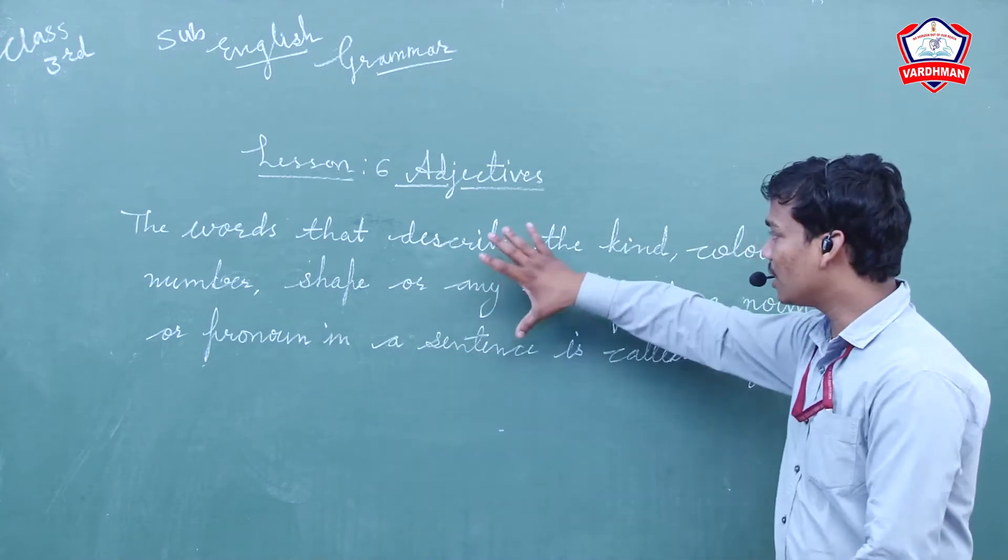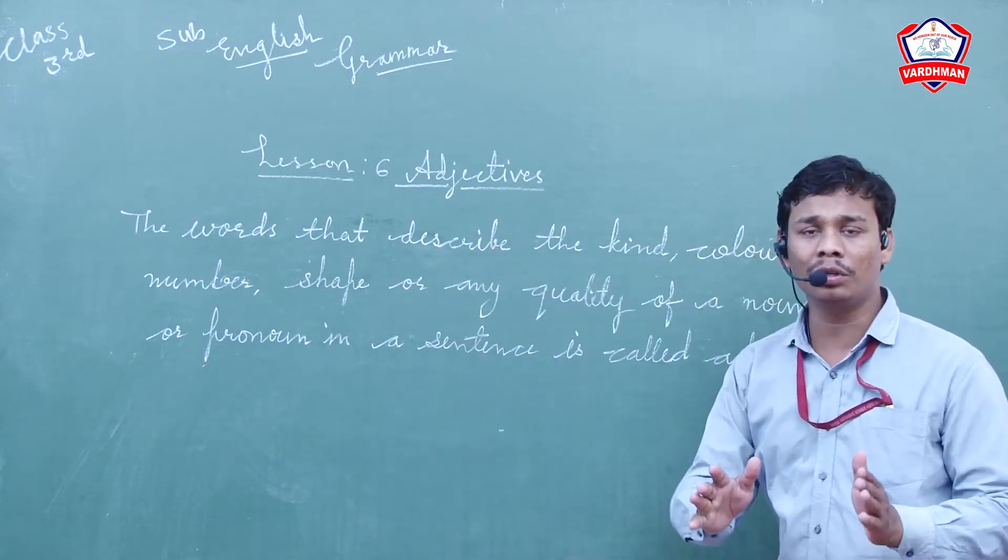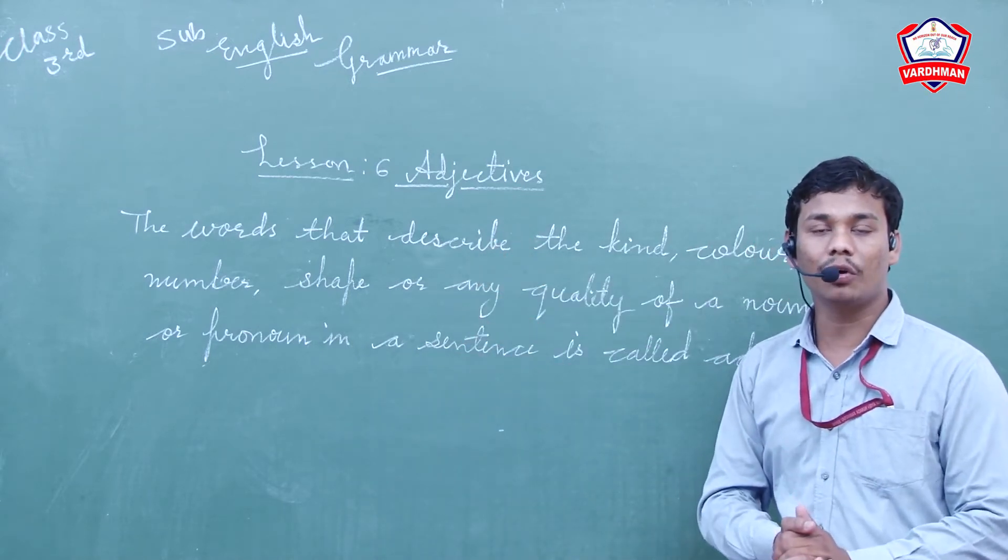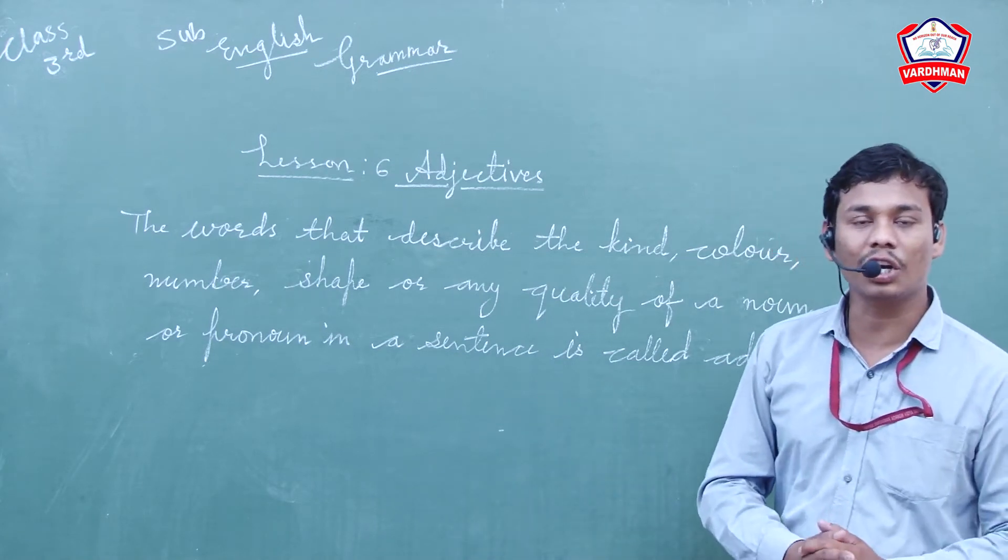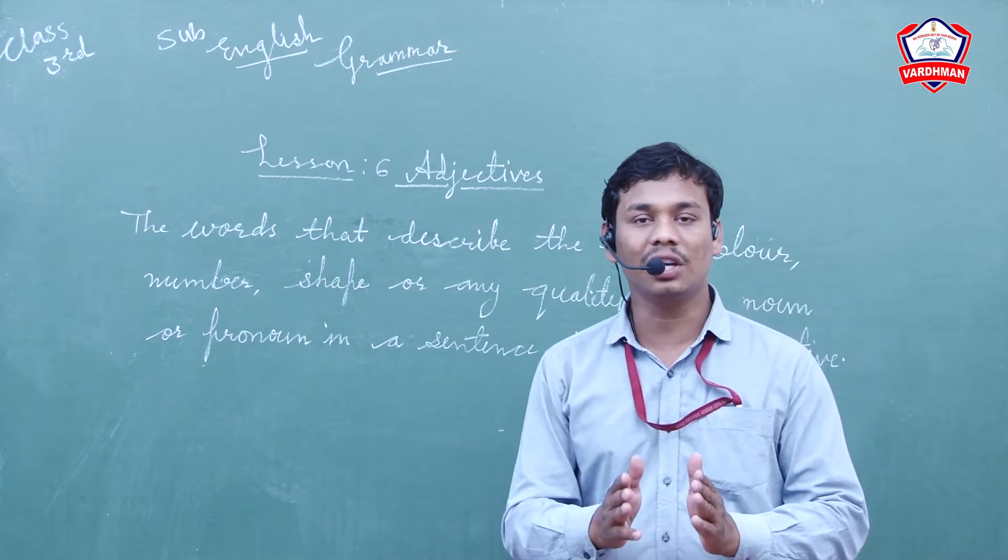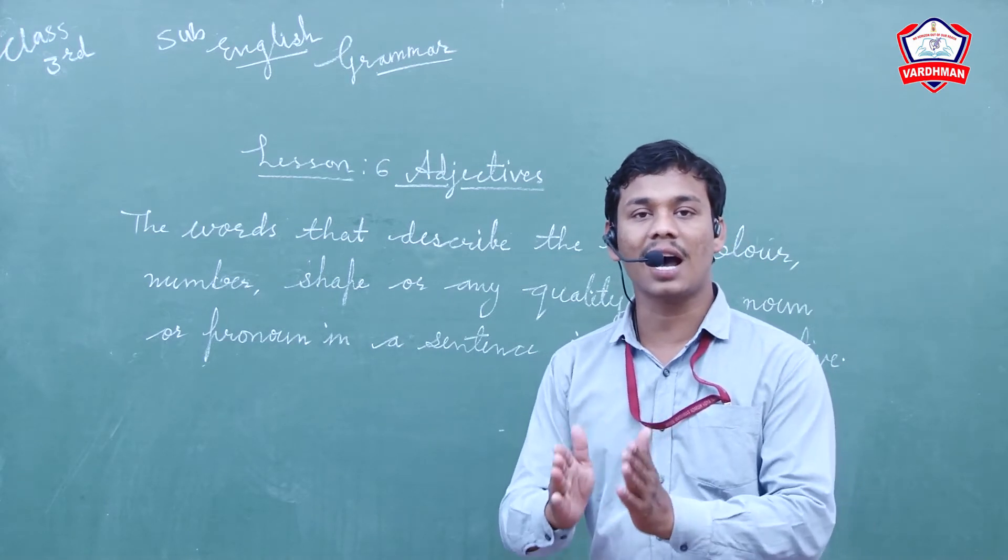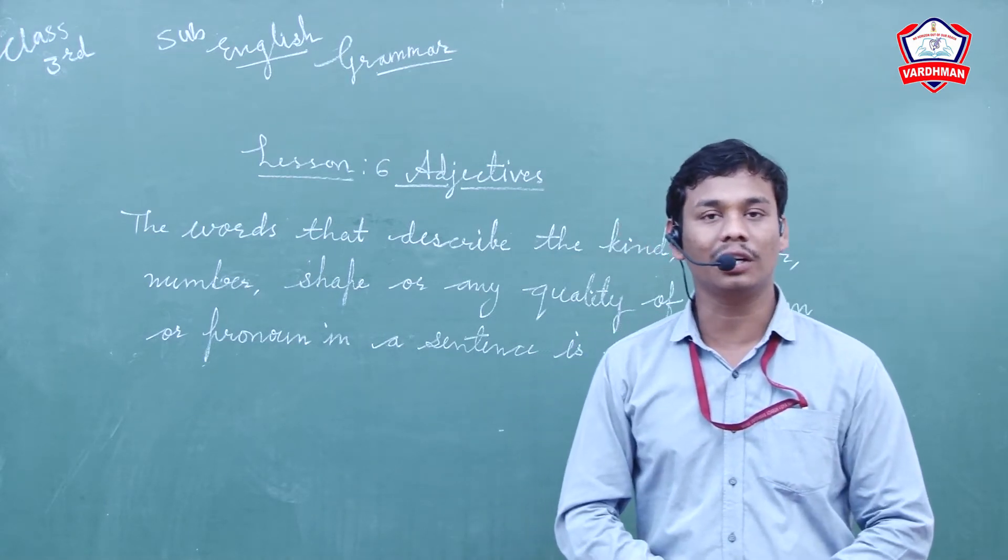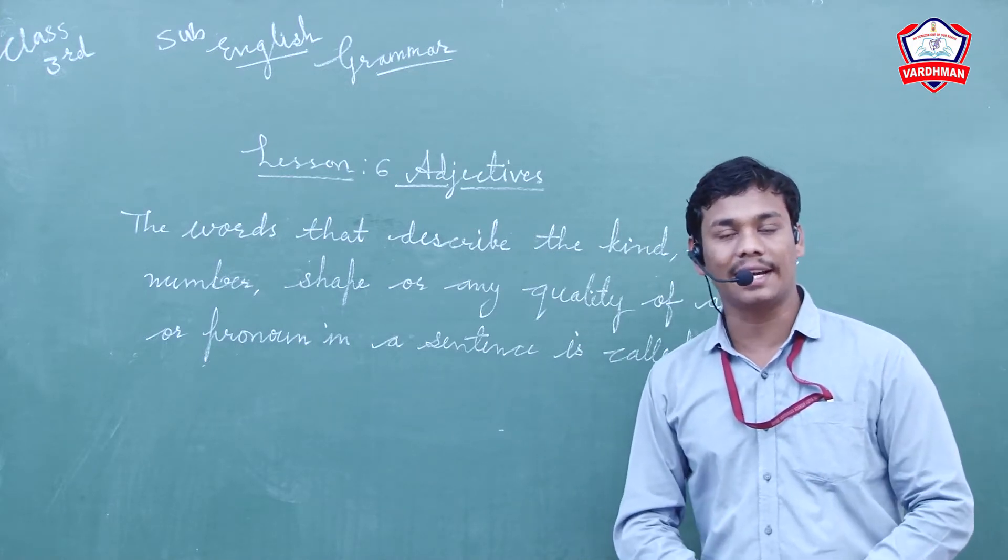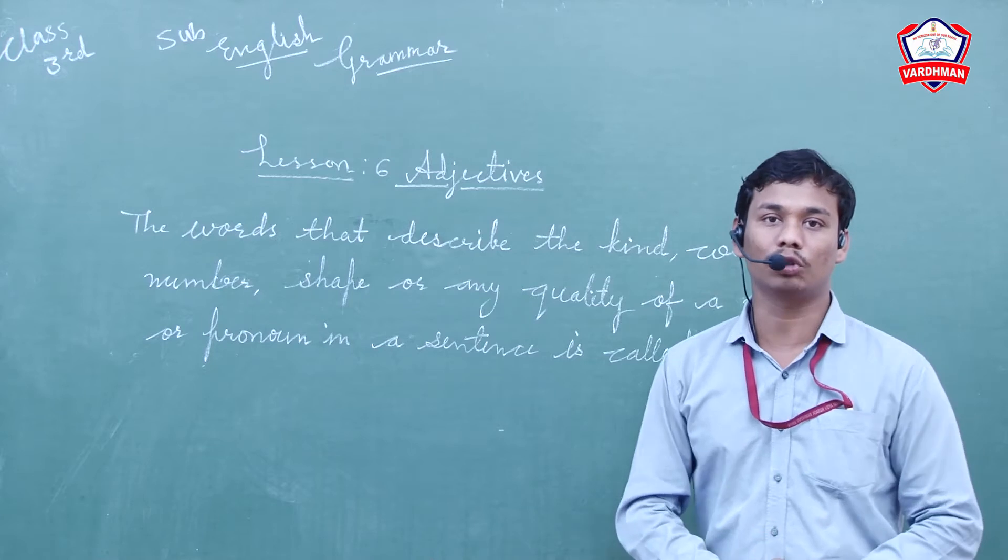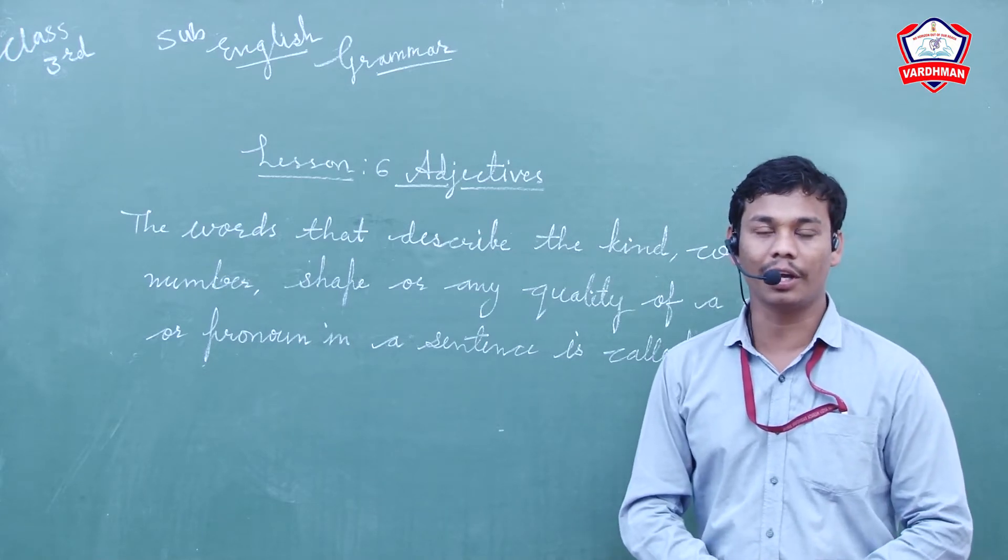Here is the long definition given. Don't write this definition in the exam. If you are able, you may write it, but you may also write the short definition. What is the definition? Describing words are called adjectives. I am repeating: describing words are called adjectives. The words that describe characteristics are called visheshan.